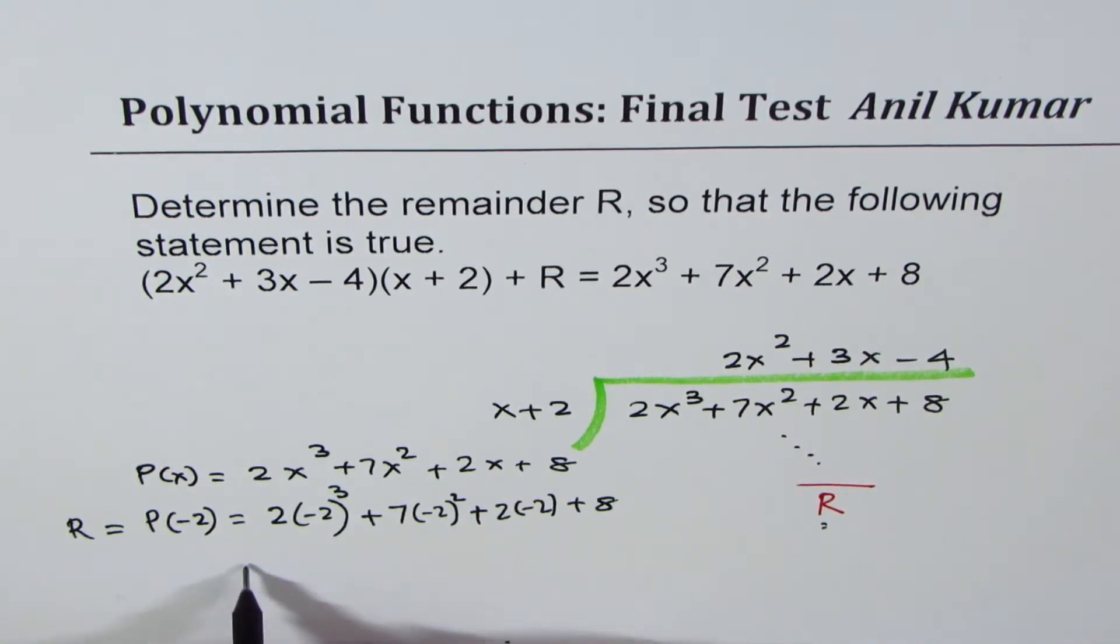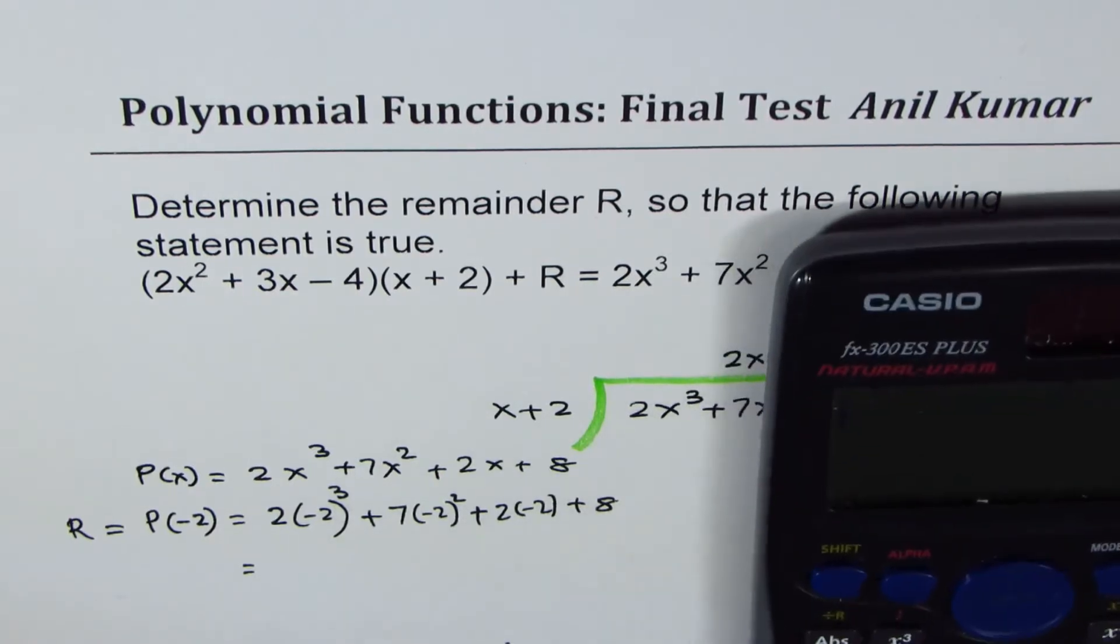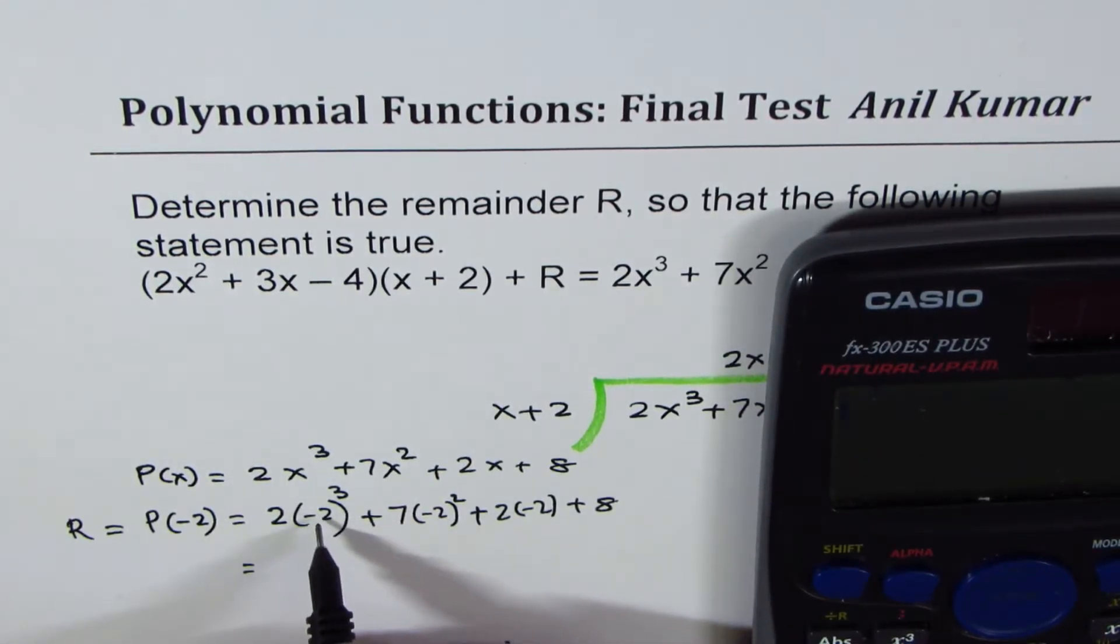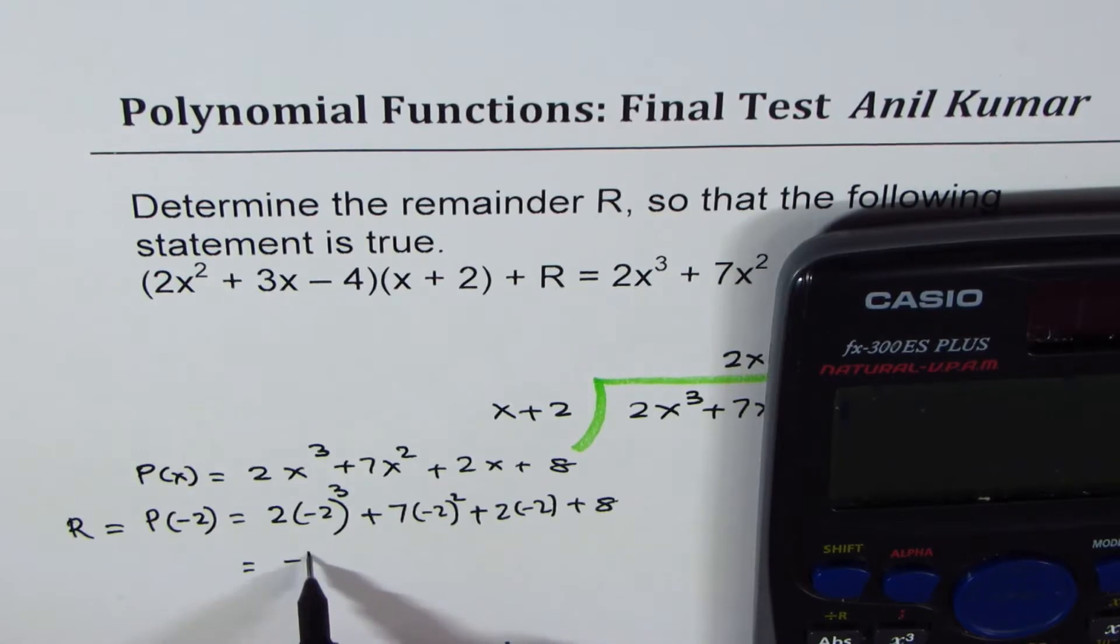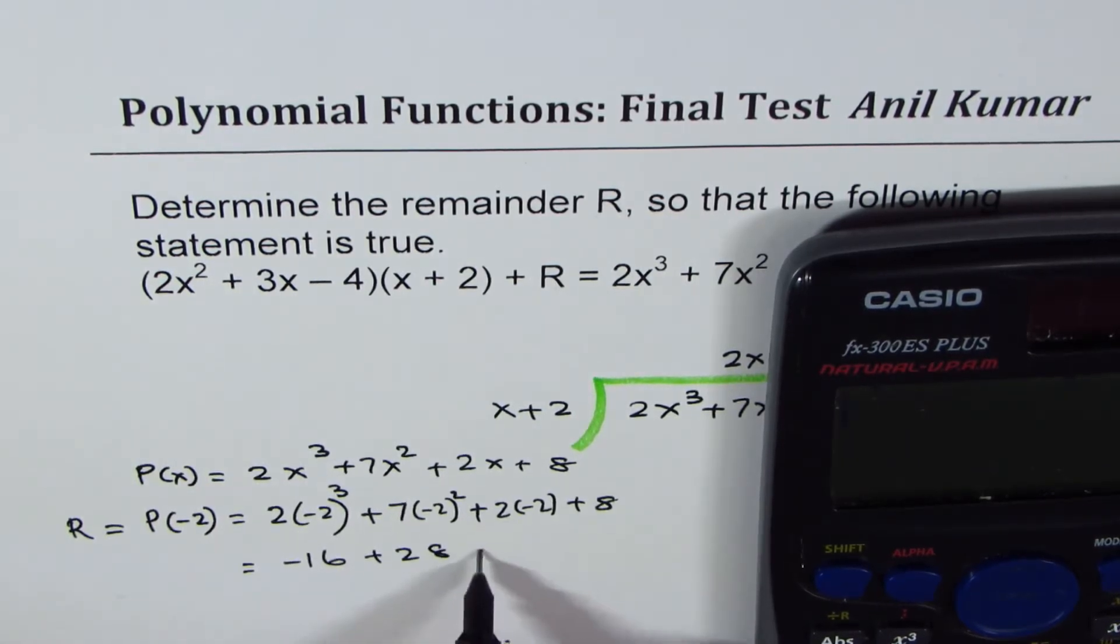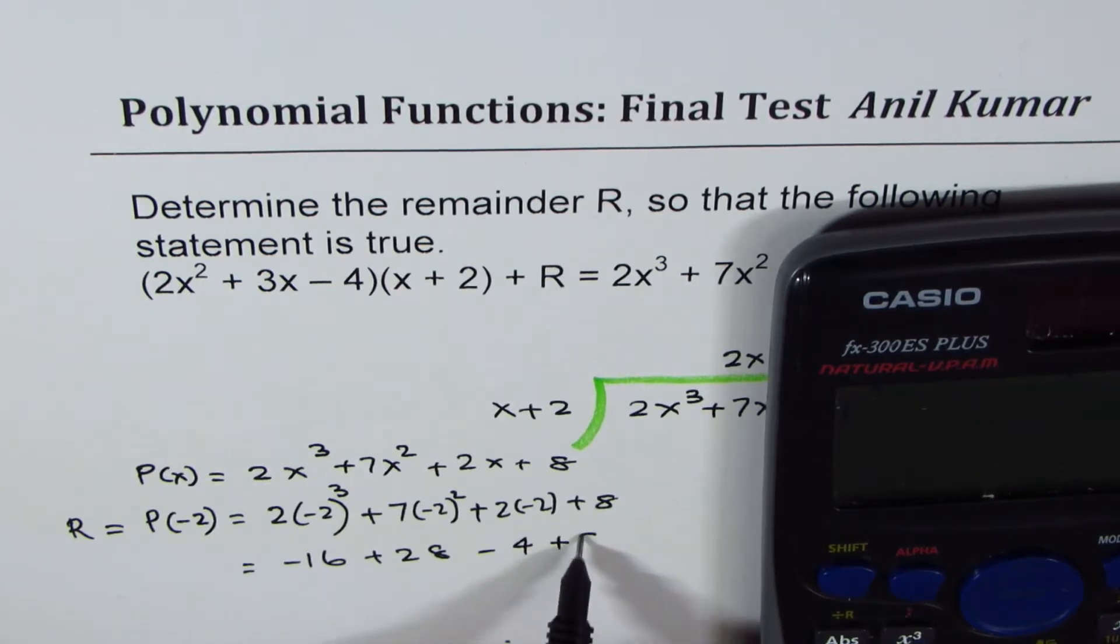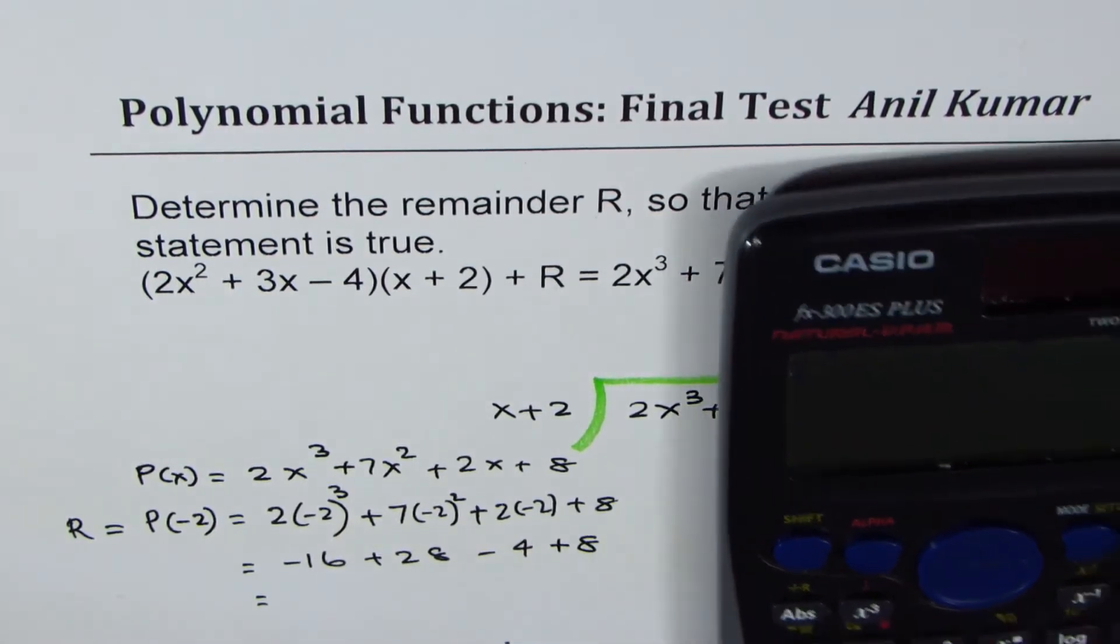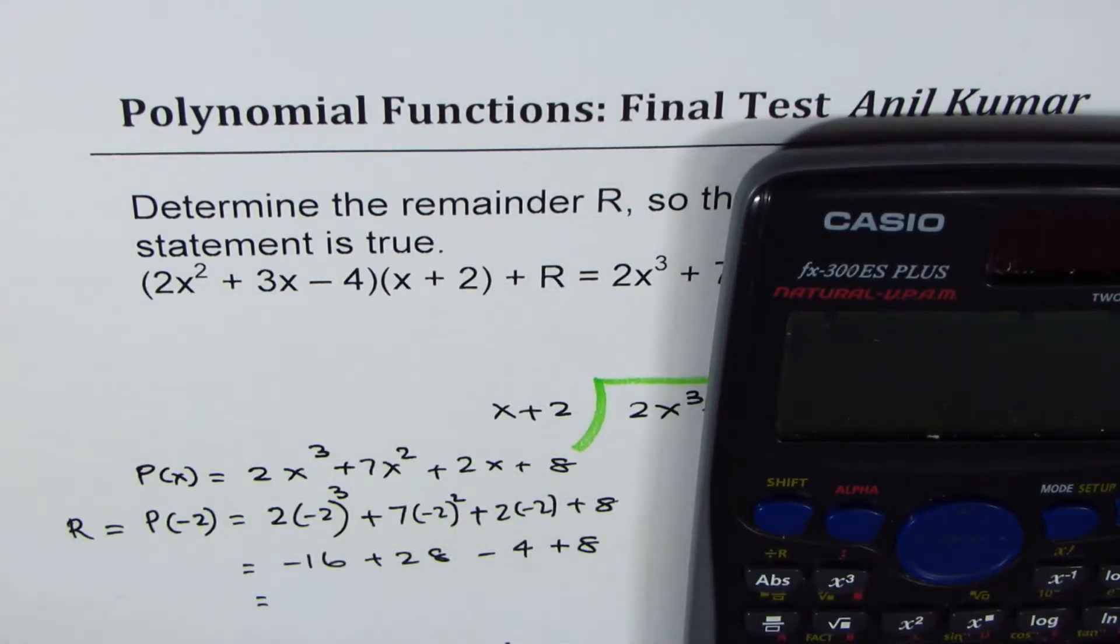And then use calculator and get your answer. So that is probably the best way. This gives you minus 8. Minus 8 times 2 is minus 16. That gives you plus 28. That gives you minus 4 plus 8. You can always use the calculator. Let's do it anyway.